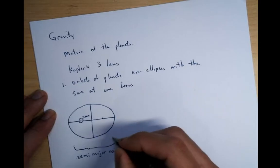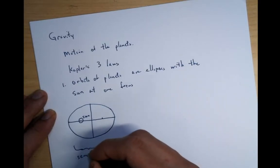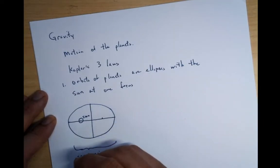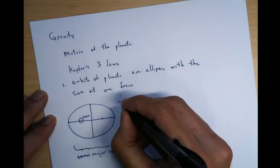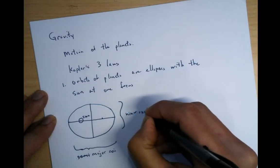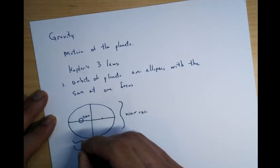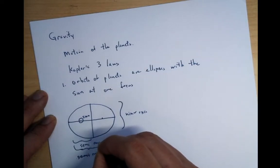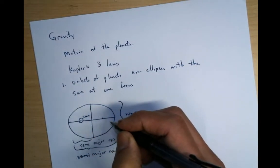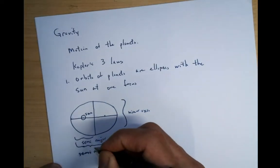Well, semi-major axis is actually half that. So in fact, it's the major axis. And this is the minor axis. And then if you want semi, this is semi-major axis. It's half the major axis. That's what semi means, half.